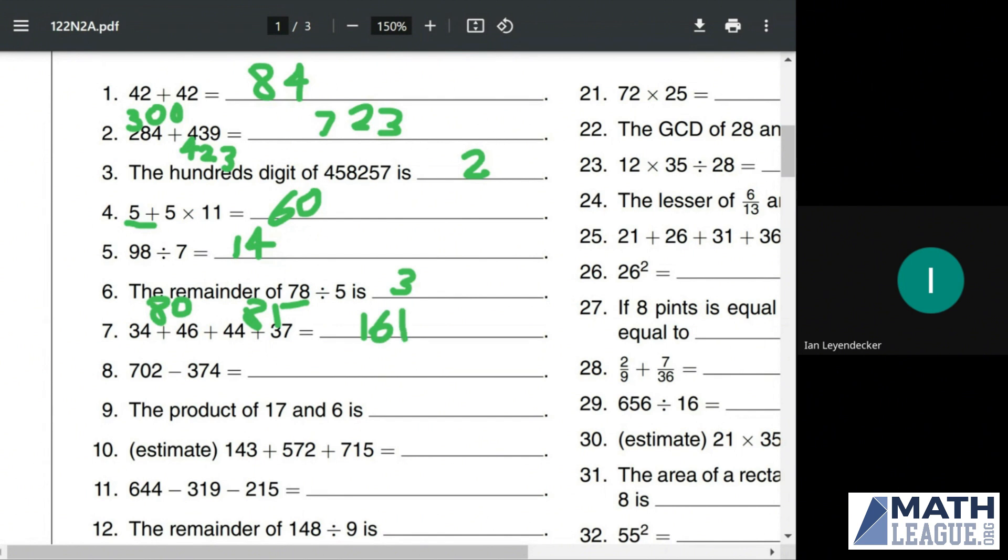702 minus 374. First of all, we can think of this as 700 minus 374. 700 minus 374 is going to be something that we can add up to pretty quickly. We go up 6 to get to 380, 26 to get to 400, and 326 to get to 700. And then we just need to go up two more. 326 plus 2 is 328.